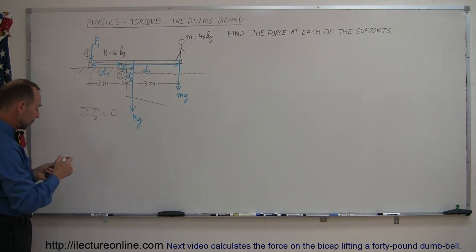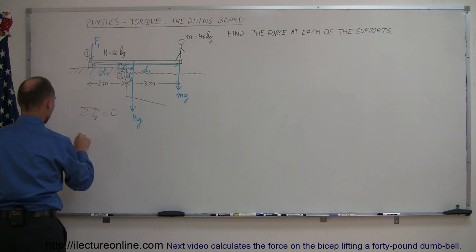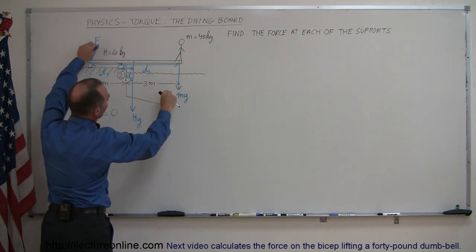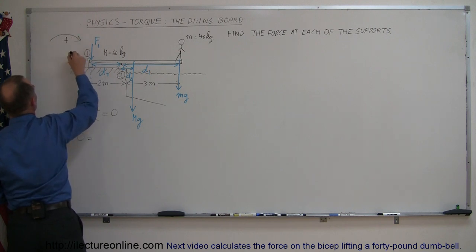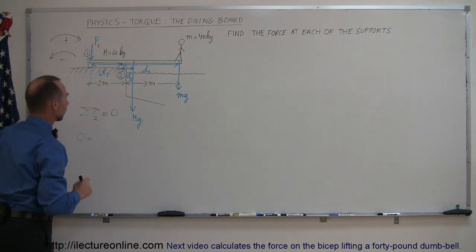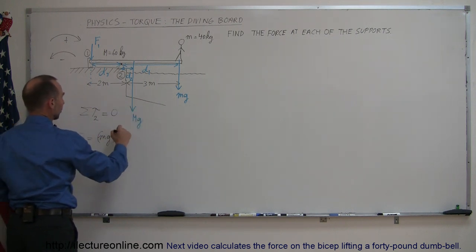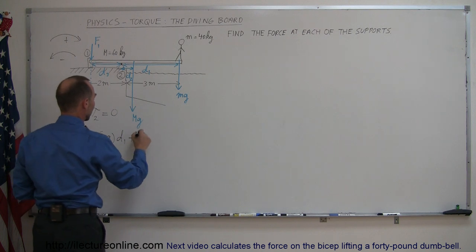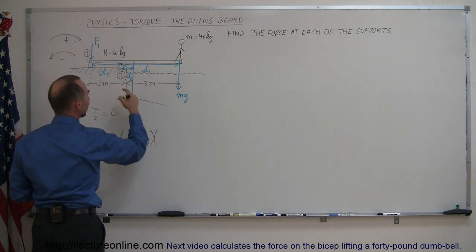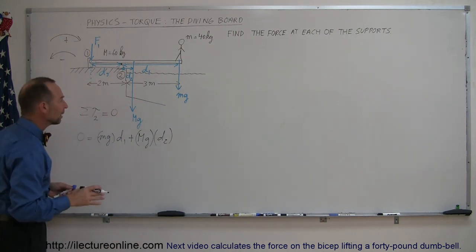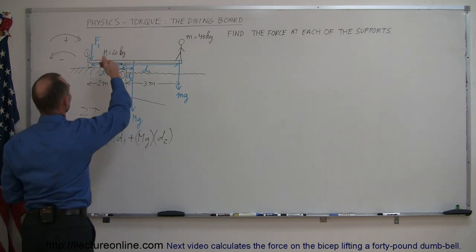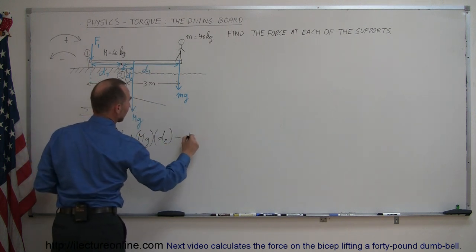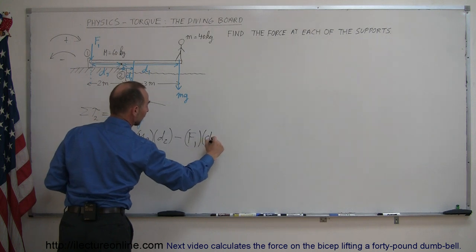Now we're ready to write our equation. The sum of all torques equals zero. The first torque: Mg — the diver's weight — if it were the only force, would cause the board to tip clockwise. I'm calling clockwise the positive torque direction and counterclockwise the negative direction. So that's plus mg times D1. The second force, the board's weight, also acts clockwise, so plus Mg times D2. The third force, F1, would cause counterclockwise rotation, so it's a negative torque: minus F1 times D3.